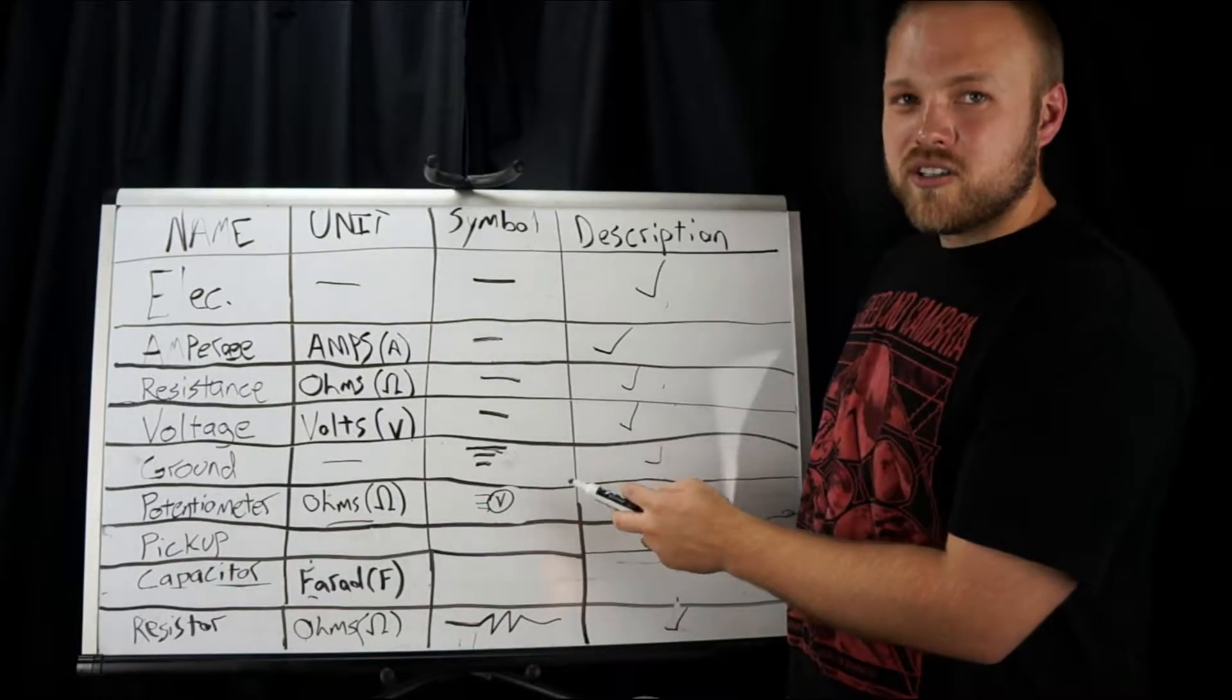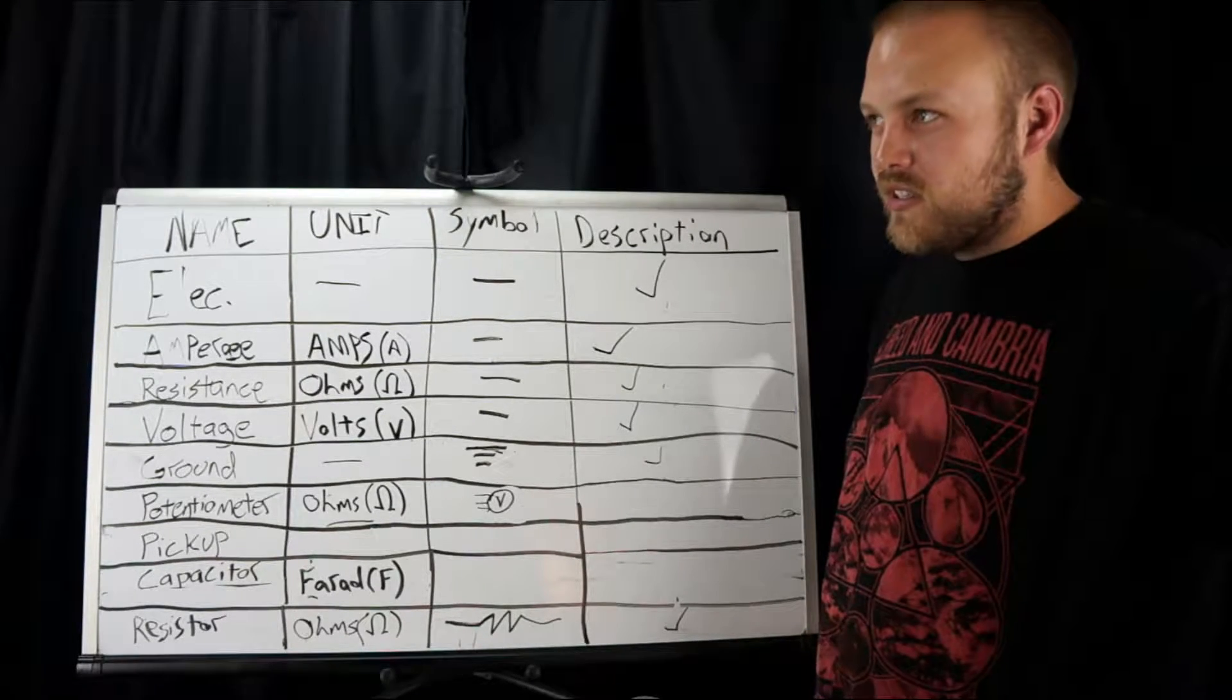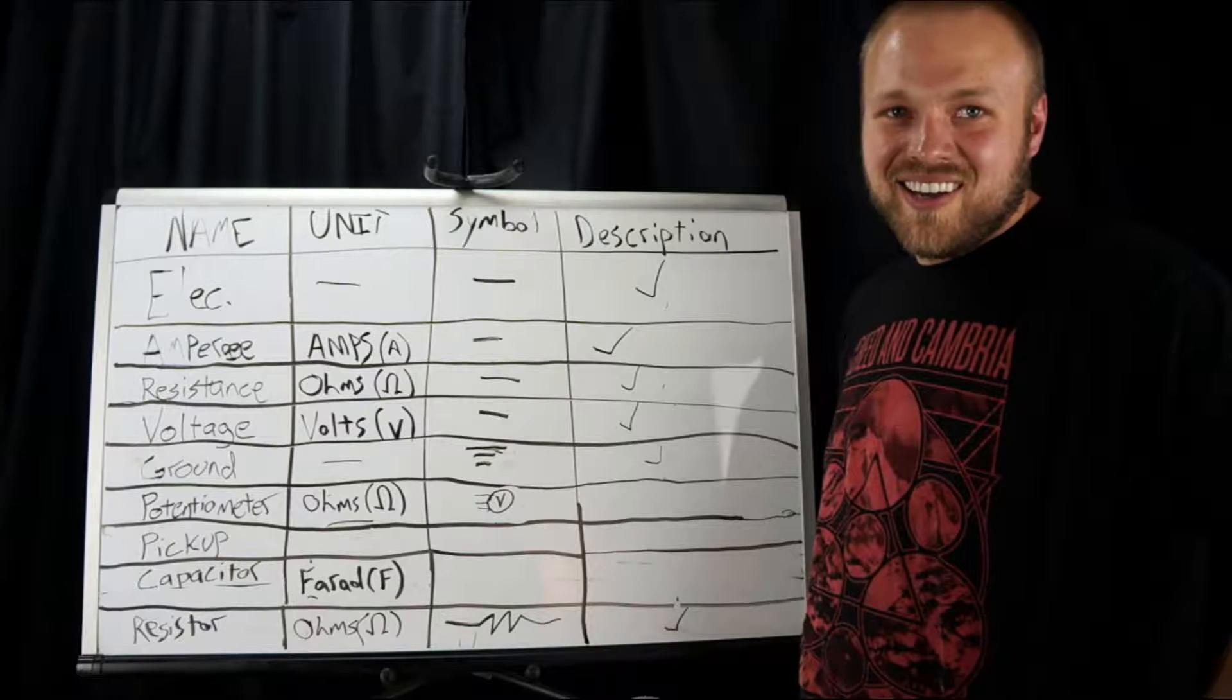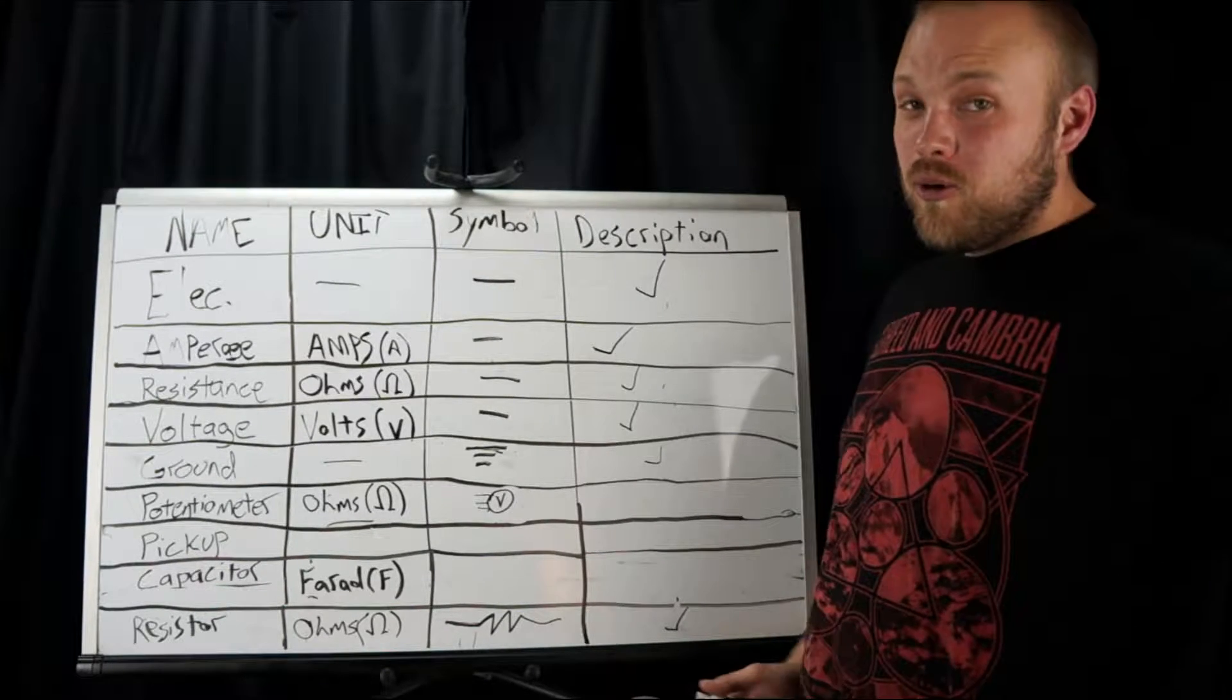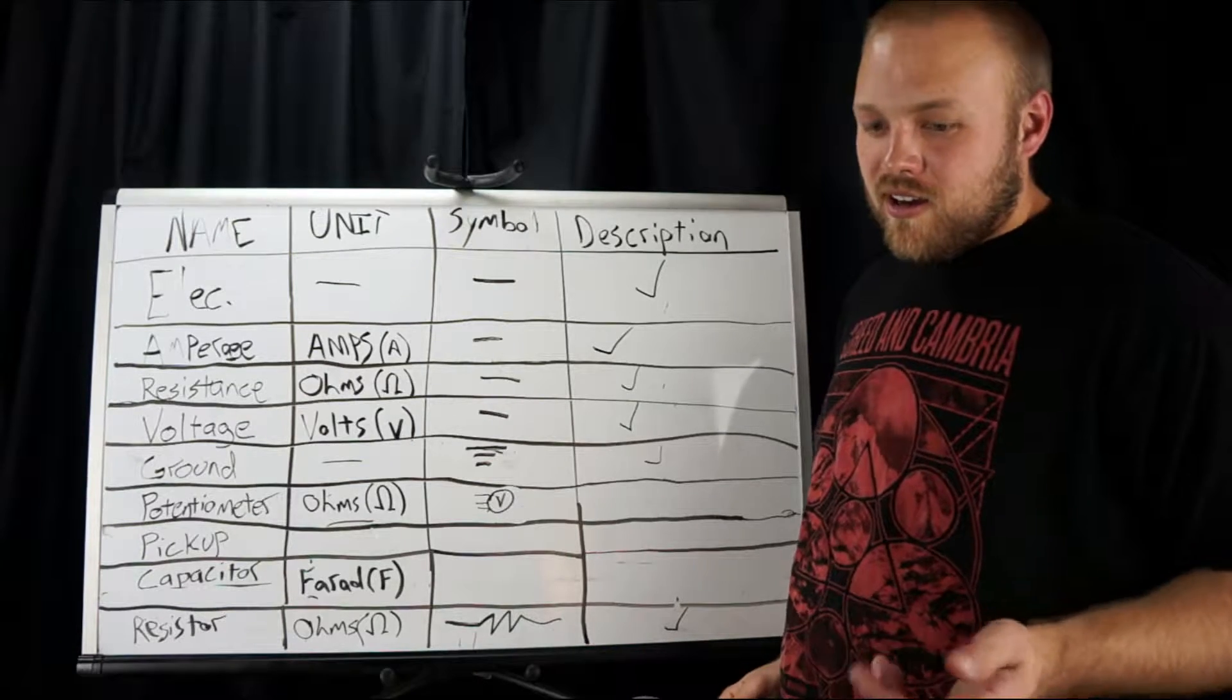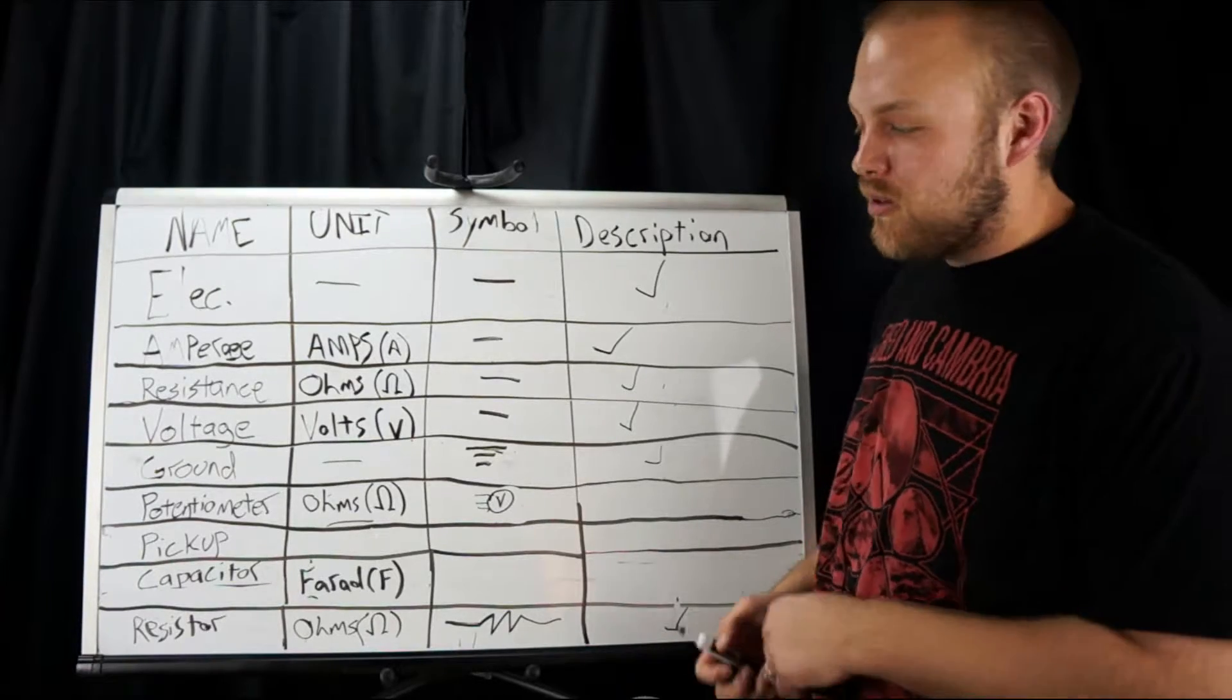This is what we would call a single pole double throw pot. It's used for things where you don't have push-pull or any other kind of shenanigans going on. Double pole double throw are a push-pull. Triple pole triple throw would be things where you have even more going on. So maybe you've got like on a wah pedal you've got a cue knob and an LED and it turns your pedal on and off. You would use a triple pole double throw for that.